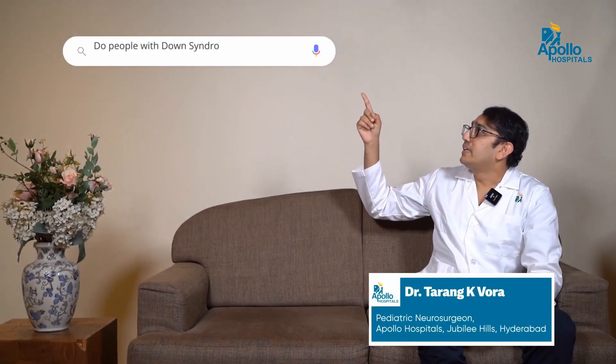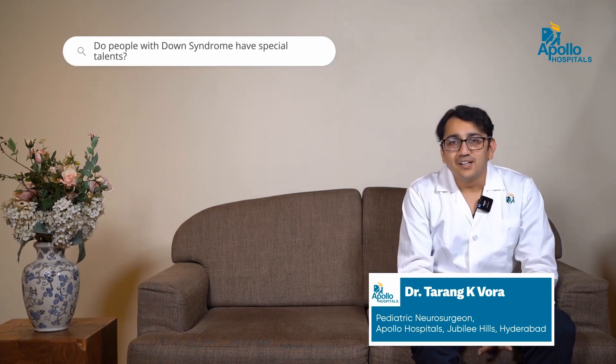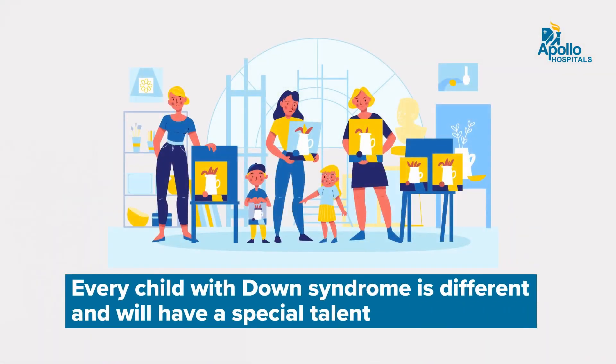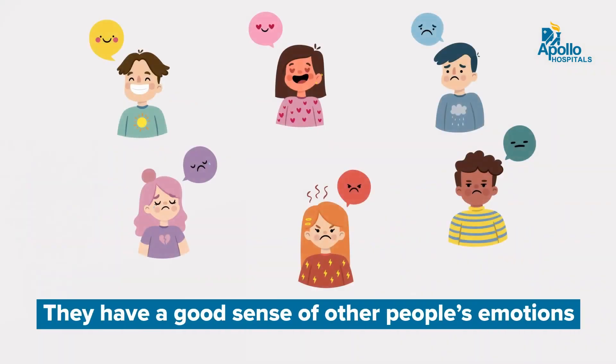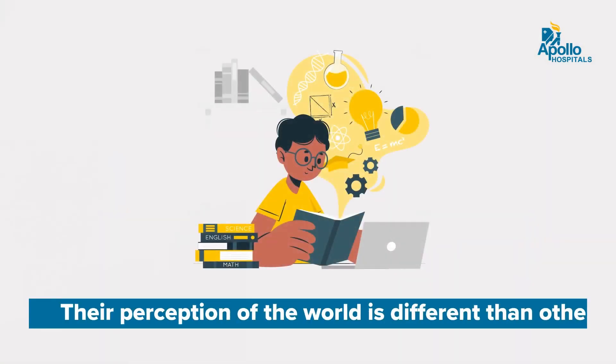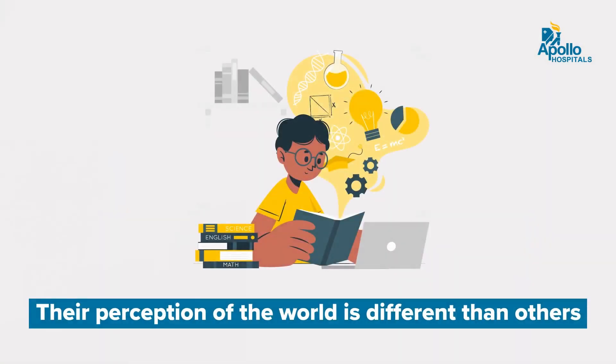Do people with Down syndrome have special talents? Every one of us has a special talent, and yes, children with Down syndrome — each and every one is unique. One pretty often seen talent is that they are able to gauge the emotions of other people very well, which sets them apart. Also, sometimes their creativity may be beyond what we have, because their perception of the world is slightly different than what we see.